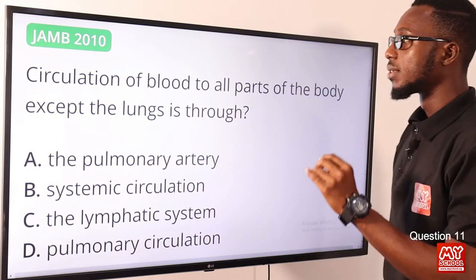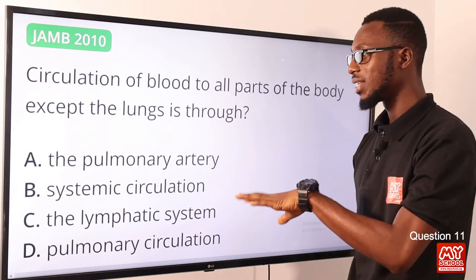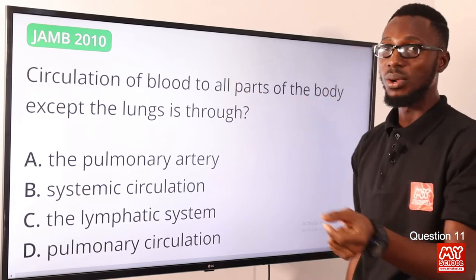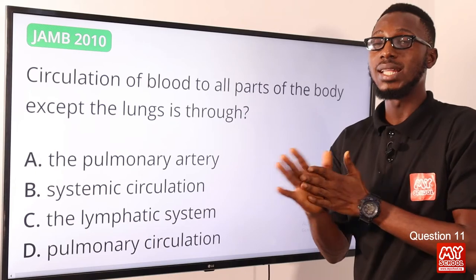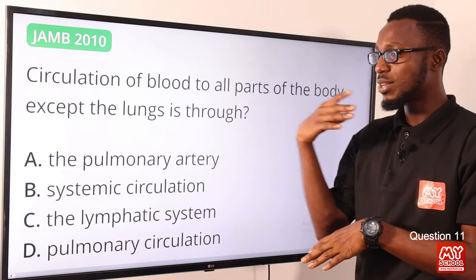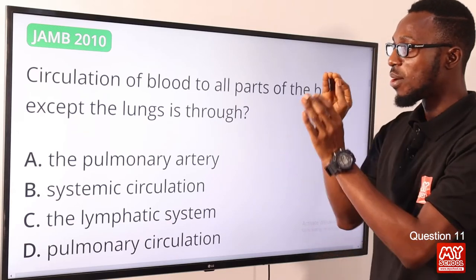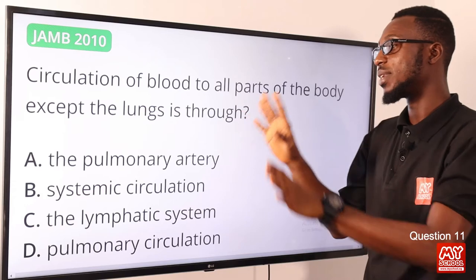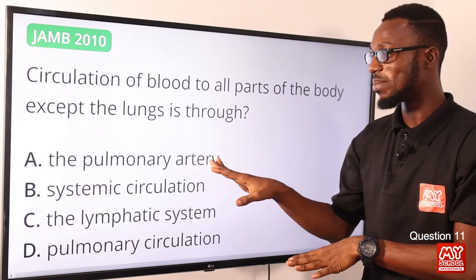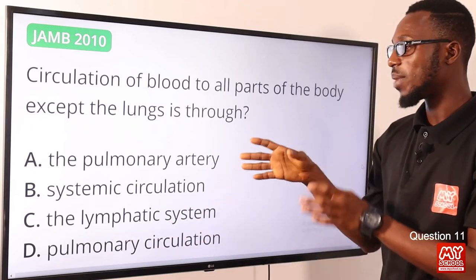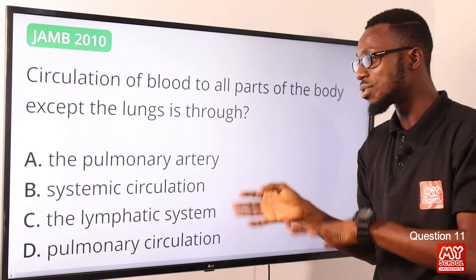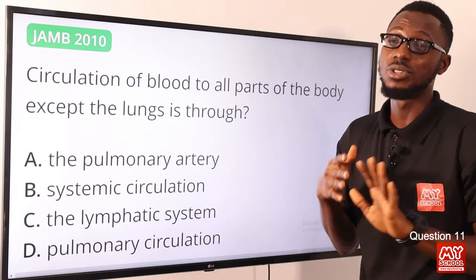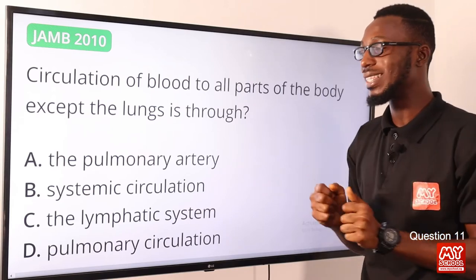Question 11: Circulation of blood through all parts of the body except the lungs is through the systemic circulation. Blood flows from the heart to all body parts except the lungs, then back to the heart. This is referred to as double circulation — the blood flows through the heart twice before completing a circuit. If circulation is between the lungs and the heart, that is pulmonary circulation. The lymphatic system involves vessels and organs concerned with the transport of lymph. The correct option is option B, systemic circulation.